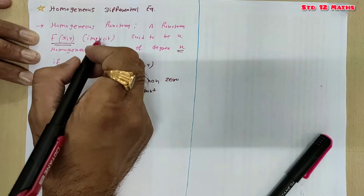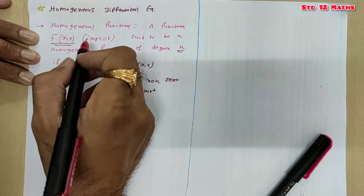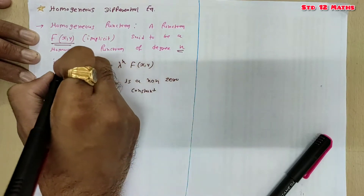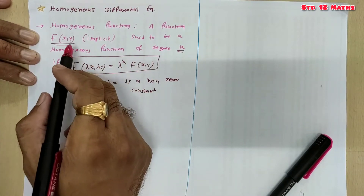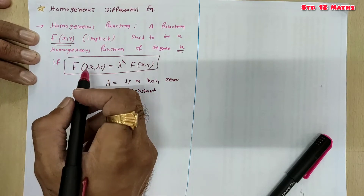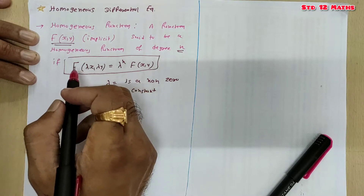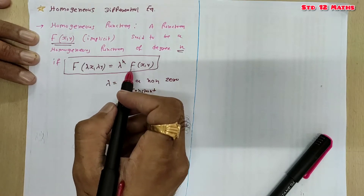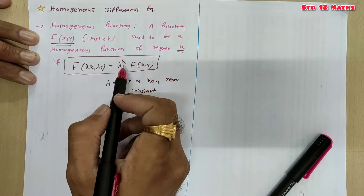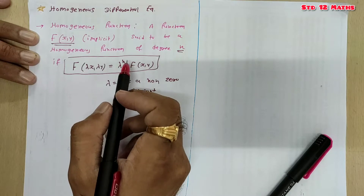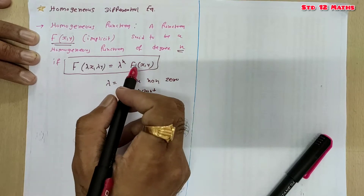So this is the definition of a homogeneous function. Given an implicit function of two variables x and y, to check whether it is homogeneous or not, you replace x with λx and y with λy, simplify, and check if you get λⁿ · f(x, y). Whatever the power of λ is, that is the degree of the homogeneous function.